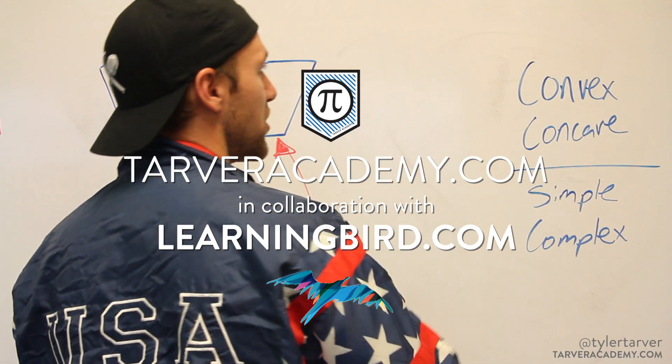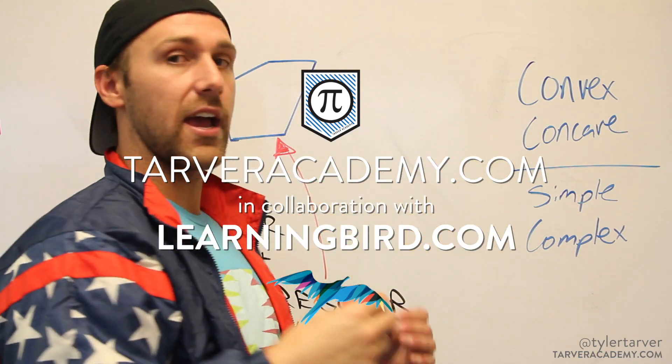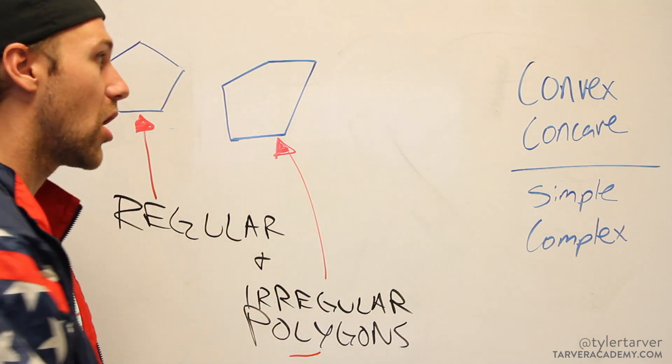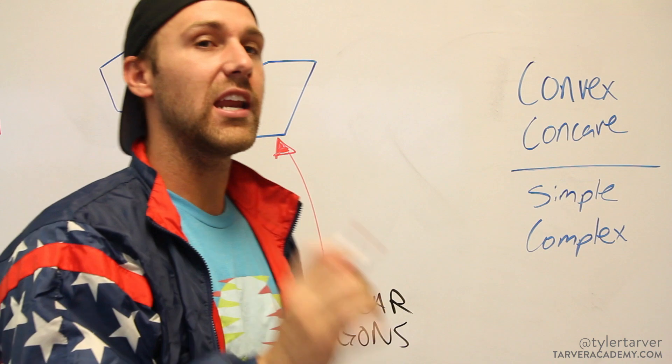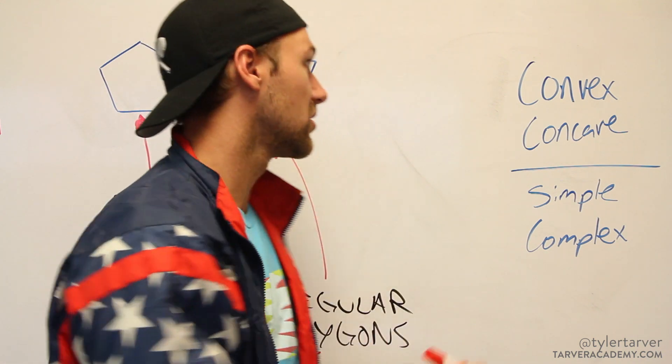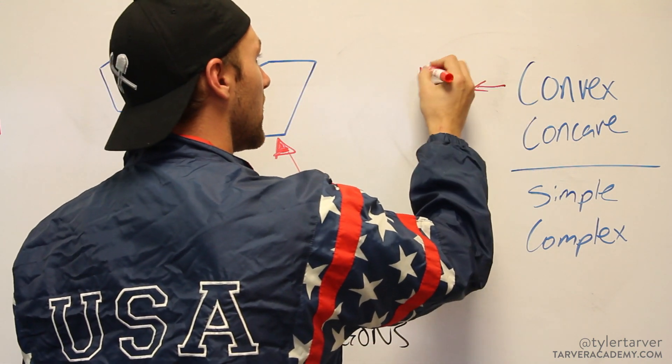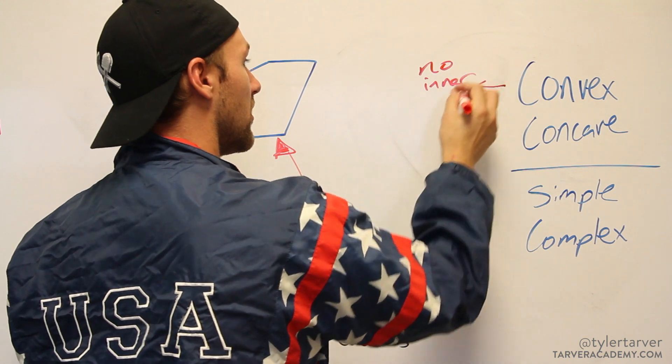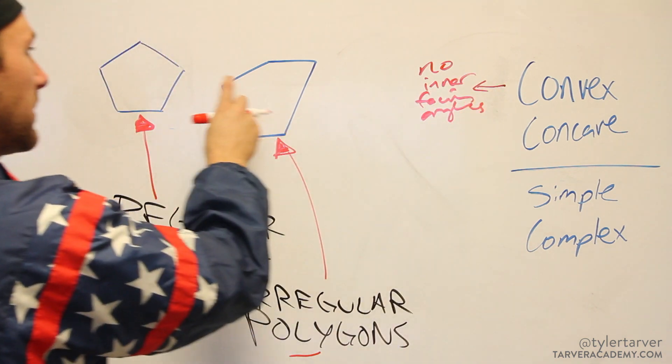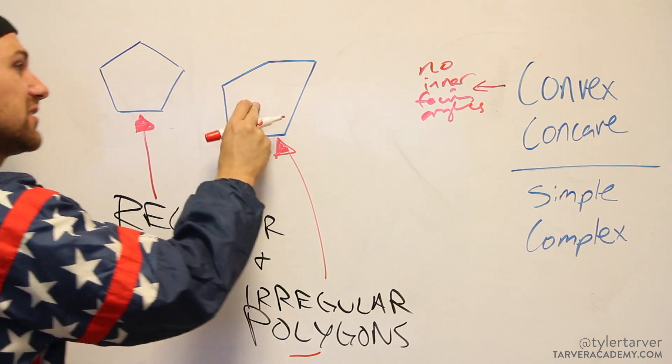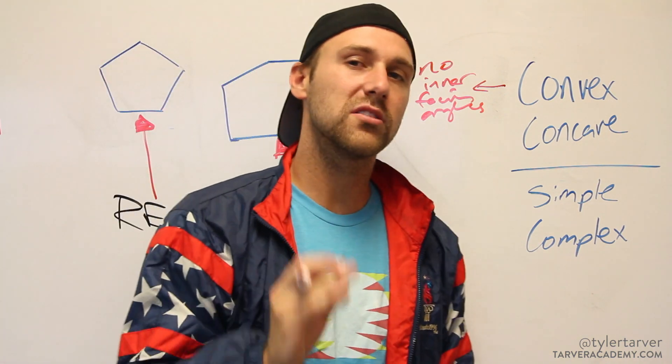The first two types are convex and concave. Convex polygons mean that they do not have any inward facing angles. That would mean this is a convex polygon. Most of what you'll deal with are convex polygons.